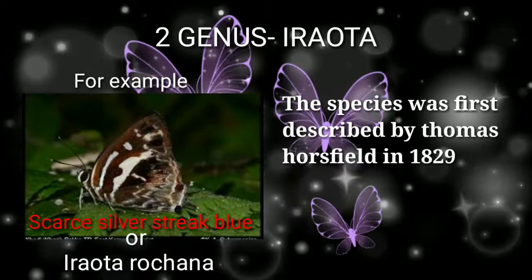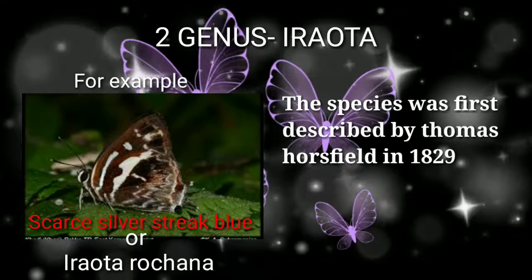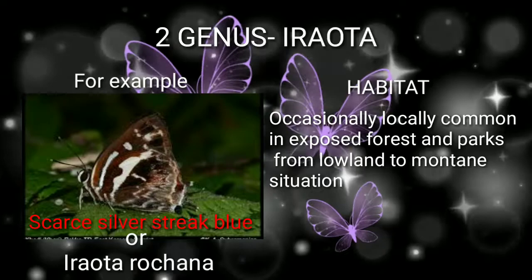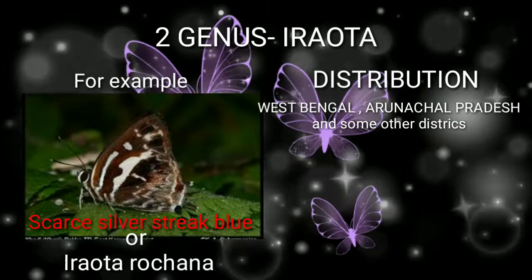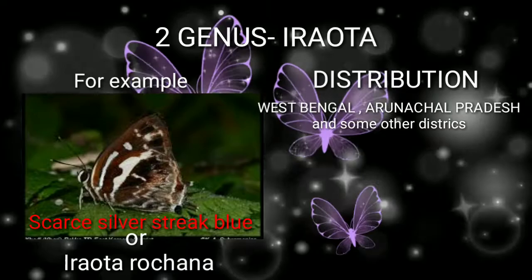Genus Iraota: the species was first described by Thomas Horsfield in 1829. Habitat: occasionally to locally commonly in exposed forests and parks, from lowland to mountain situations. Distribution: West Bengal, Arunachal Pradesh, and some other districts, though the speaker notes some uncertainty about those additional districts.